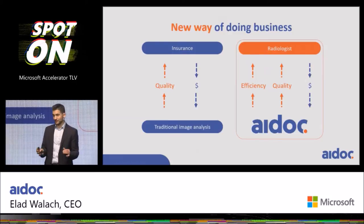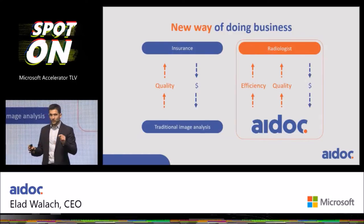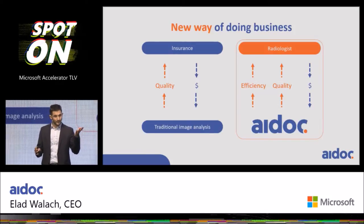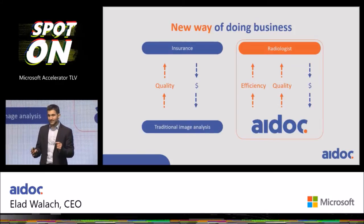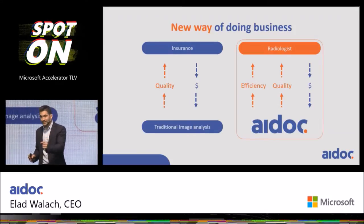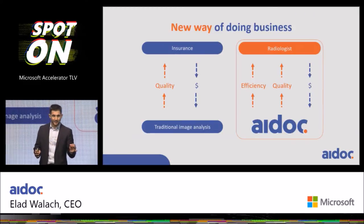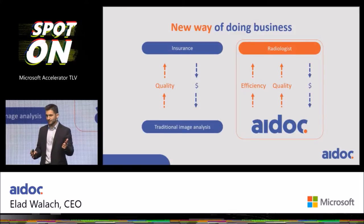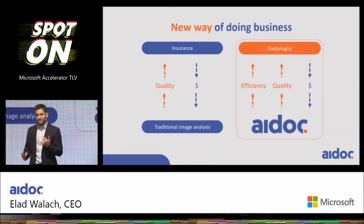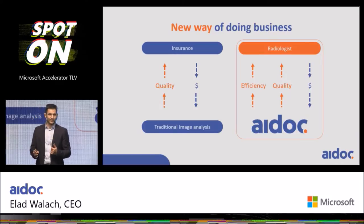For us, this gives quite a unique business advantage. Other companies in the field try to sell to insurance companies by promising better quality. However, we can target directly the private radiology groups, which is most of the US market. They are getting paid per scan, and the dual advantage of quality and efficiency gives them a very clear ROI benefit, and for us, a faster go-to-market strategy.